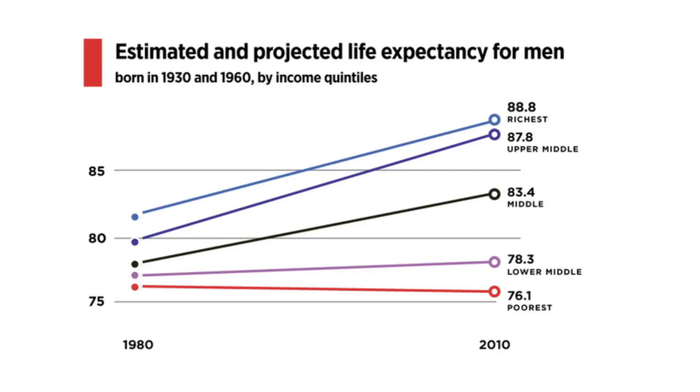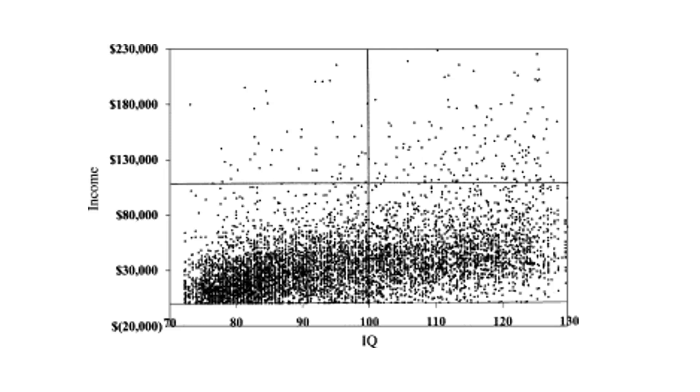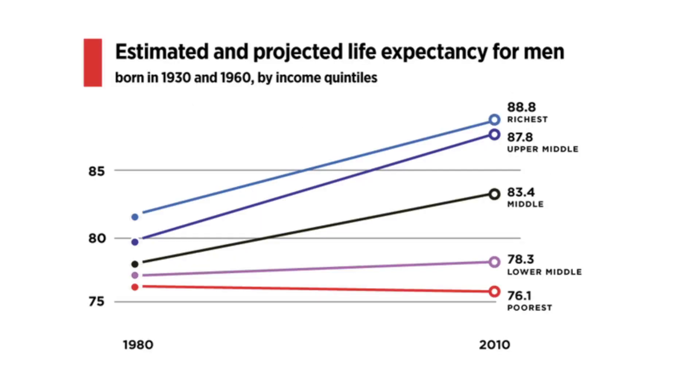Estimated project life expectancy for men born in 1930 and 1960 by income quantiles. So the richer you are, the longer the lifespan you have between 1980 and 2010. They're in the 80s for the richest, and then the poorest are in the 70s. So you could get another five years of life, depending on where you fall. That is life expectancy and income. Now, income and IQ are also correlated, so you could say that higher IQ people live longer.